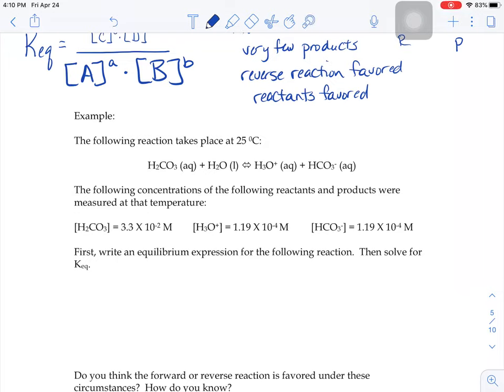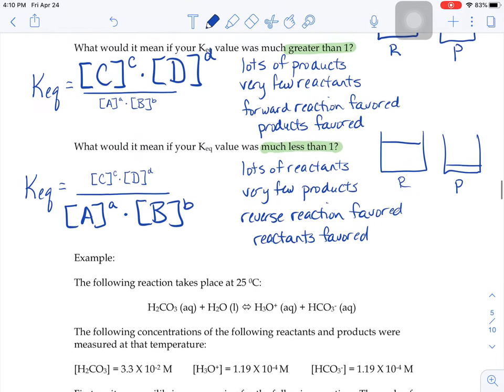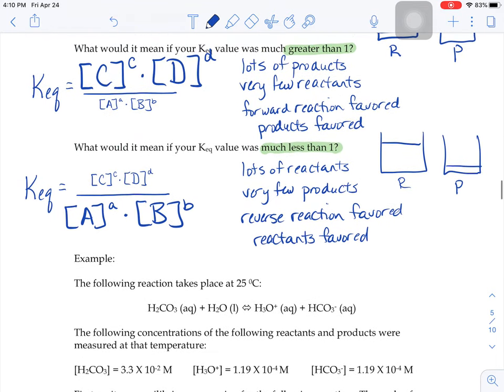So now we know how to write equilibrium expressions. We have a general idea of what it means to be at equilibrium and what the K_eq value would tell us. If it's greater than one or less than one, what does that mean?